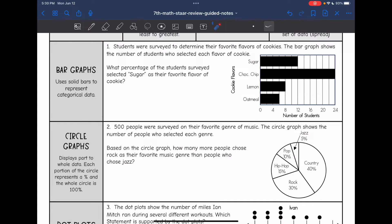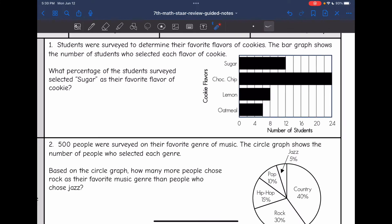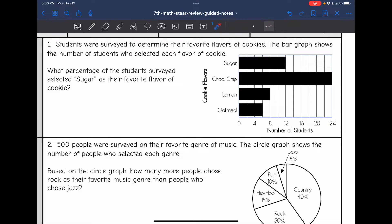So the first thing we're going to look at is a bar graph or sometimes this is called a histogram. It just uses solid bars to represent categorical data. So this first one says students were surveyed to determine their favorite flavors of cookies. The bar graph shows the number of students who selected each flavor of cookie. What percentage of the students surveyed selected sugar as their favorite flavor of cookie?